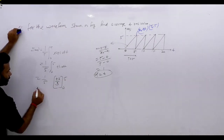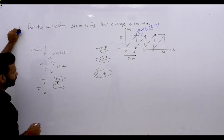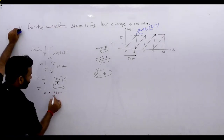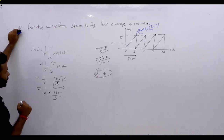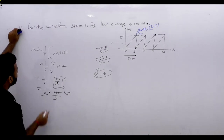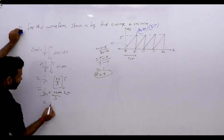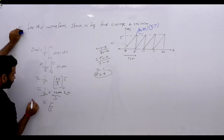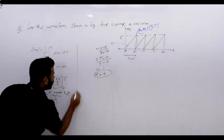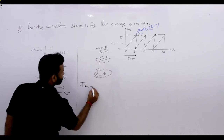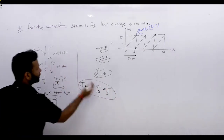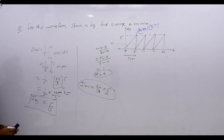We integrate t cube upon 3 with limit 0 to 5: (1/5) × (125/3) = 25/3. On the left-hand side we have I²_rms, so I_rms = √(25/3) = 5/√3. From the formula, I_rms = Im/√3 = 5/√3. Both the conventional approach and the formula give the same answer.